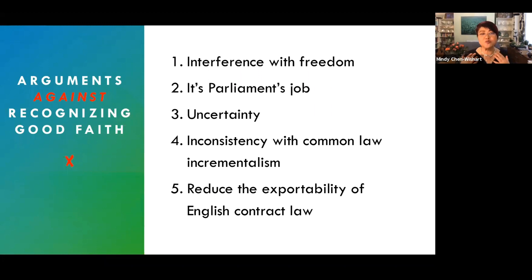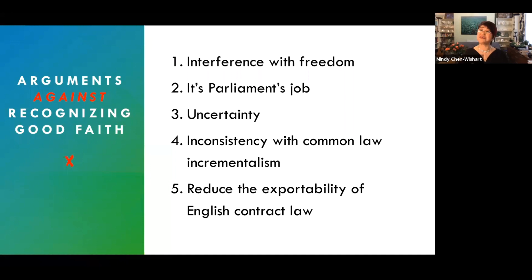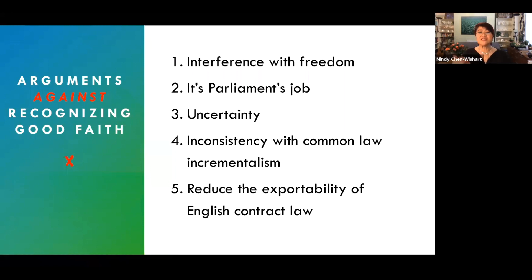The third objection is the ubiquitous complaint about uncertainty. Certainty is important, but I think it's really overrated. It just can't be an end in itself. A rule that says we don't recognize the contracts of people with black hair would be relatively certain, but it would not be fair and it would not be useful. We're used to contracts applying quantitatively uncertain, shape-shifting concepts like intention, consent, reasonableness, legitimate interest, proximity, fundamentality, foreseeability. These are indispensable in many areas of law without fatally destabilizing them.